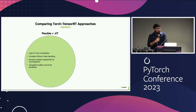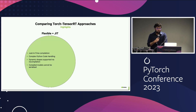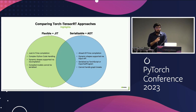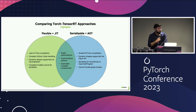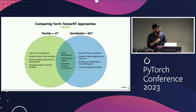Here's a summary of both approaches. In the JIT plus flexible approach, we can handle complex Python code, and dynamic shapes are supported via recompilation; however, you cannot serialize the compiled modules. In the ahead-of-time approach, dynamic shapes are supported via the input API, and you can serialize as TorchScript or exported programs, but it cannot handle graph breaks. Both approaches undergo similar graph optimizations for high-performance inference and share similar customization options like precision and min block size. Any custom converters or lowering components can be easily extended to both approaches since they share the same core components.